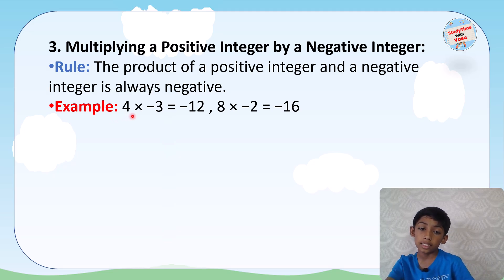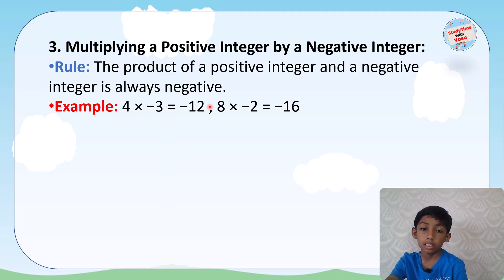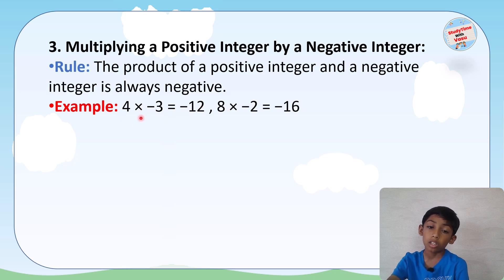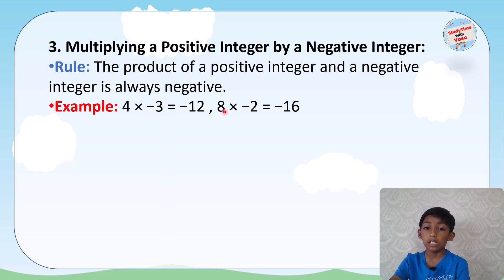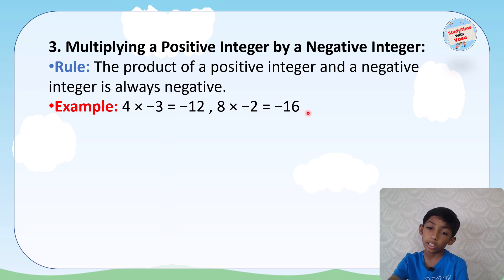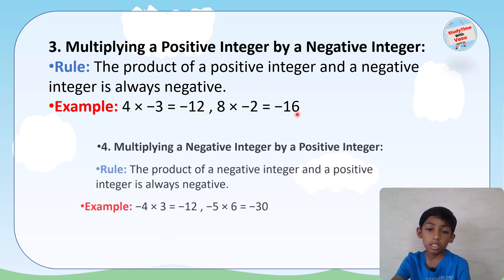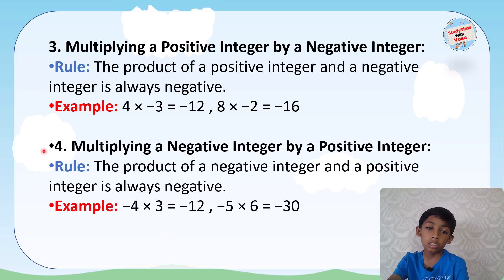As you can see in this example, 4 × (−3) equals −12. We multiply the absolute values and then add the minus sign. Same in this example: 8 × (−2) equals −16.